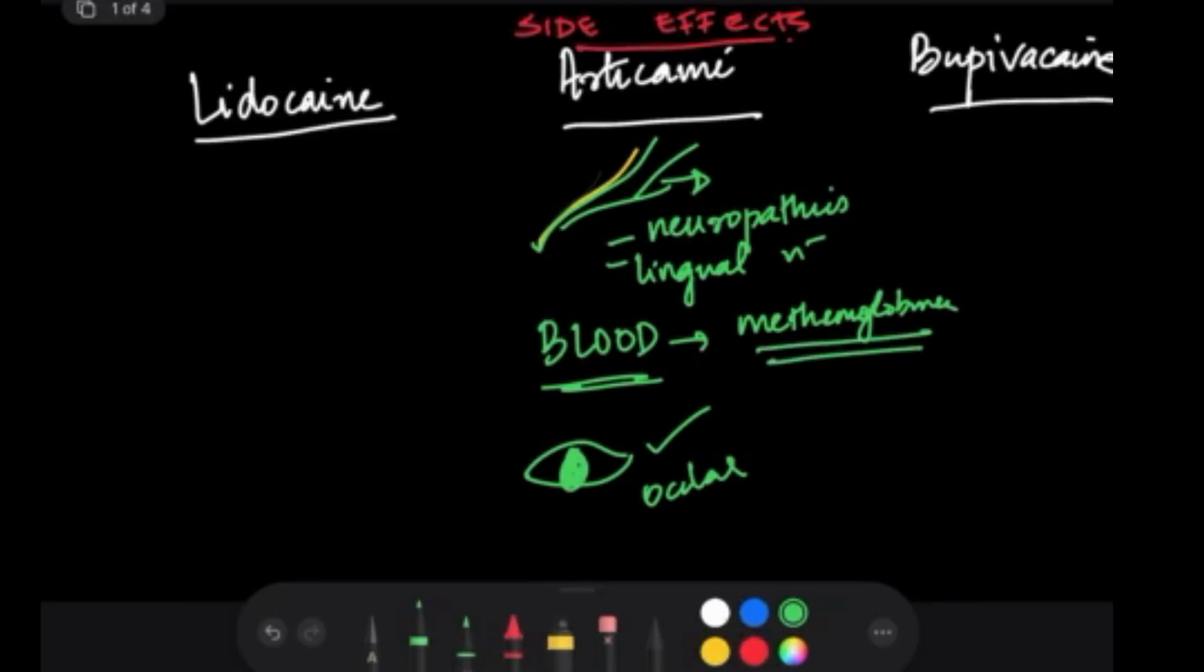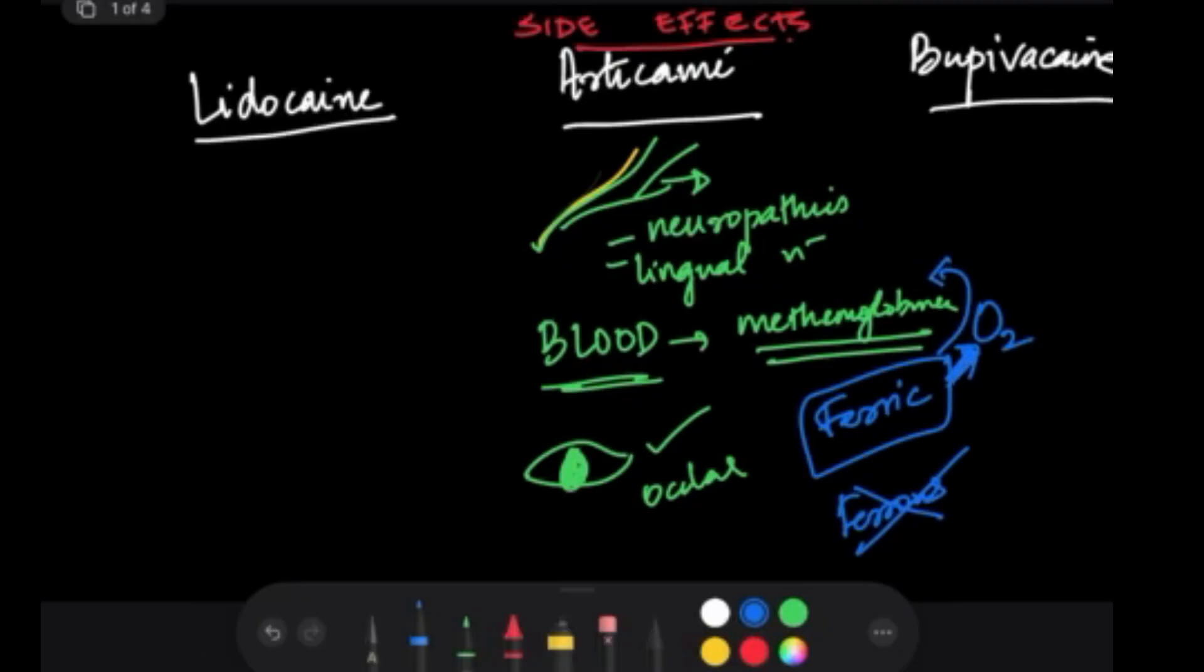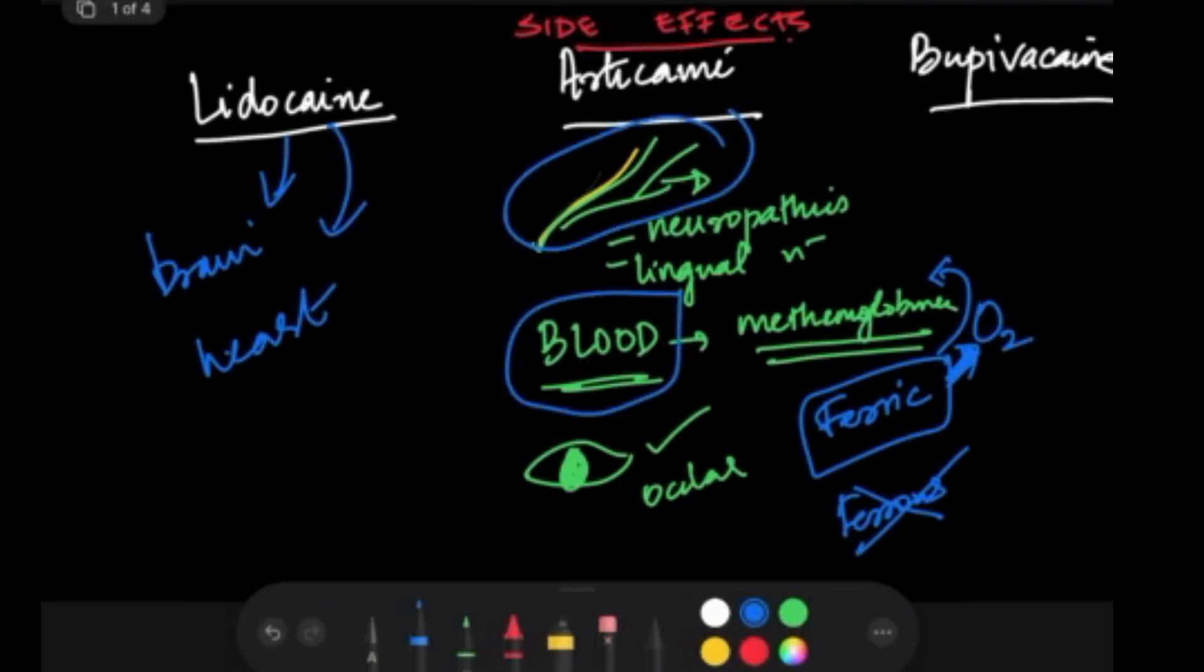Methemoglobinemia is basically a lot of methemoglobin in your blood. This causes the iron in our hemoglobin to stay in the ferric state. When it is in the ferric state, the iron cannot carry oxygen. We need oxygen to be transported to various parts of the body. When there is a lot of methemoglobin in our body, this doesn't happen, causing problems like coma, even death. What you need to remember: we drew a brain and a heart for lidocaine side effects. For articaine, remember the nerve, blood for methemoglobinemia, and eyes.